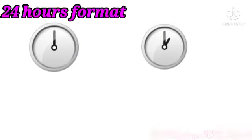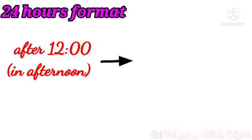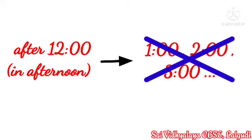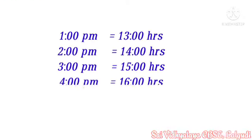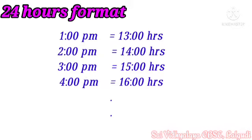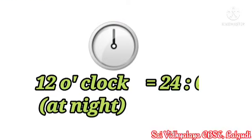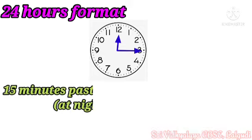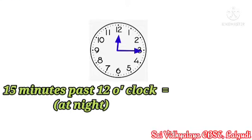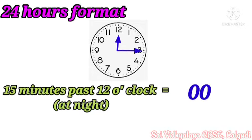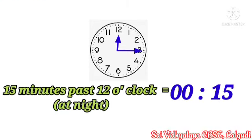After 12 o'clock, what is the time? 1 o'clock. Yes. But when the time is written in 24-hour format, the hours of the afternoon are not written as 1, 2, 3 again. Instead they are written as 13, 14, 15, 16 and so on. 12 o'clock at night will be written as 24:00. If it is 15 minutes past 12 o'clock, then 15 minutes past 12 o'clock at night will be written as 00:15 in the 24-hour format.